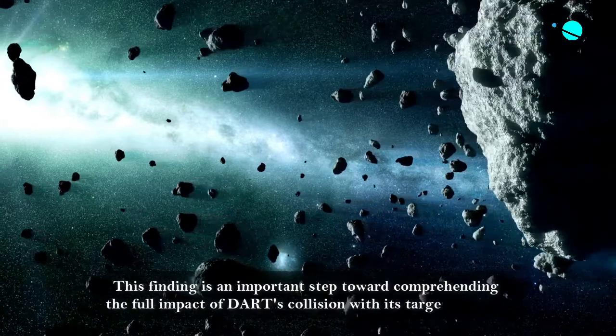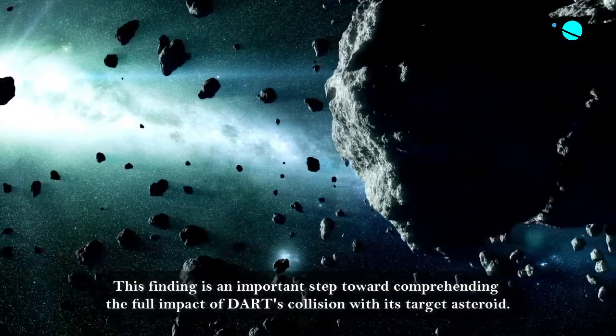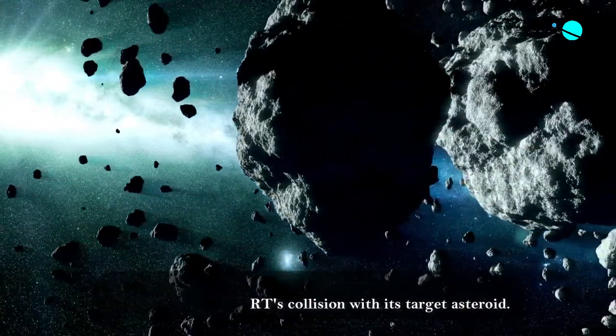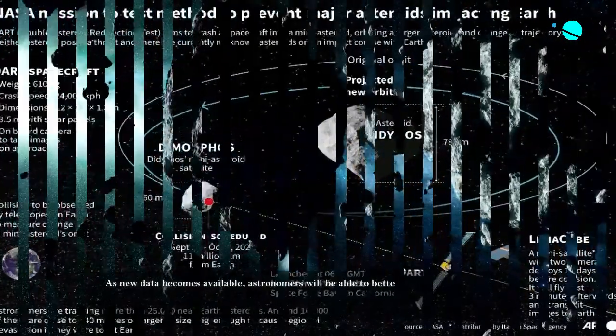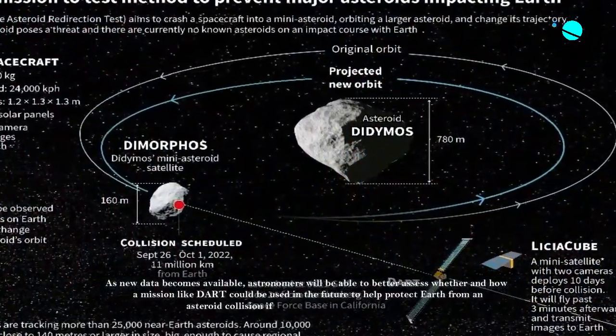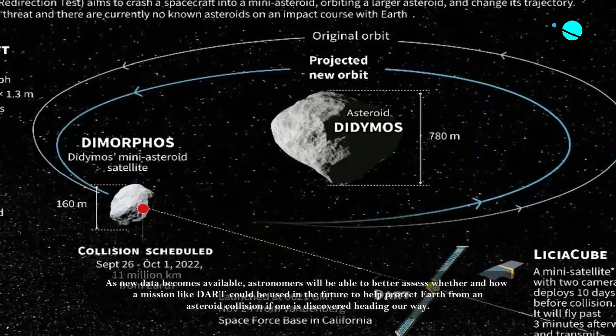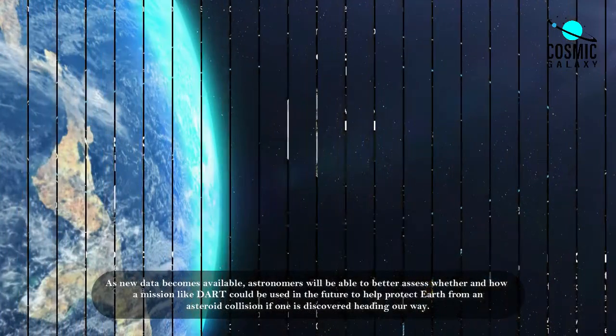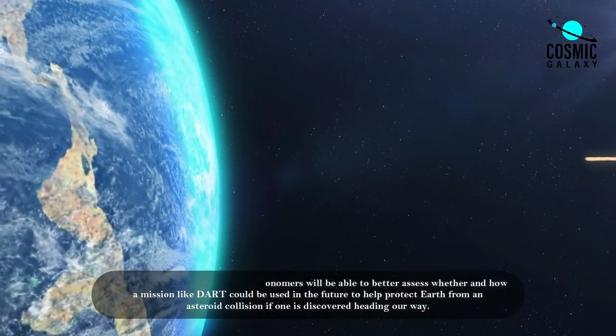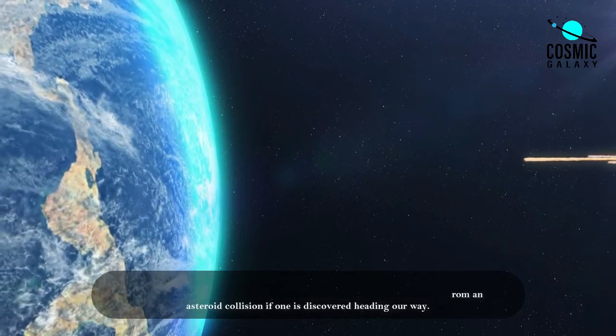This finding is an important step towards comprehending the full impact of DART's collision with its target asteroid. As new data becomes available, astronomers will be able to better assess whether and how a mission like DART could be used in the future to help protect Earth from an asteroid collision if one is discovered heading our way.